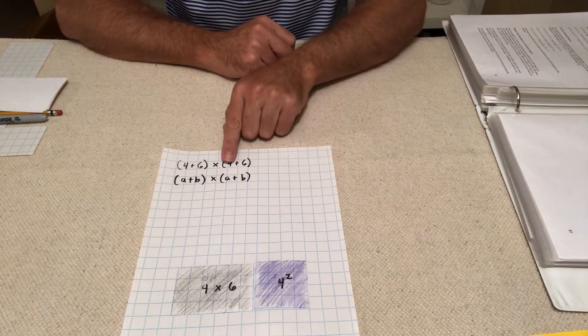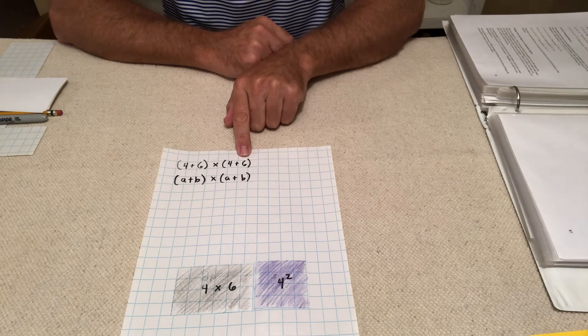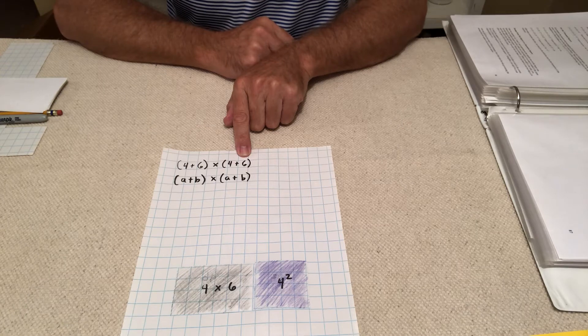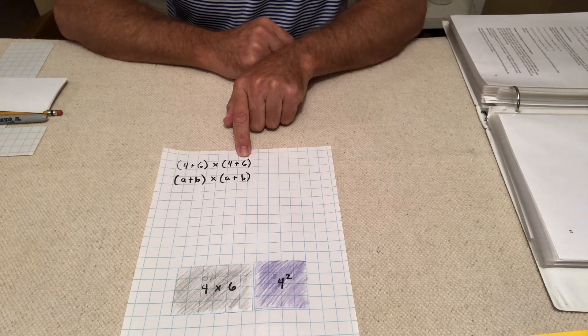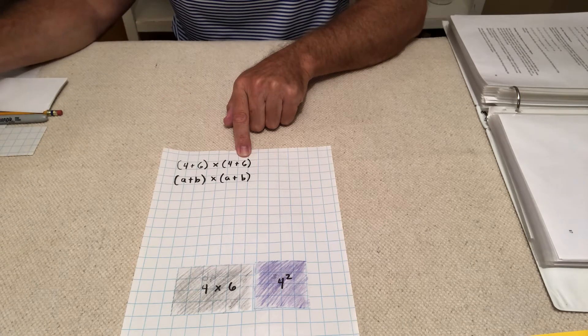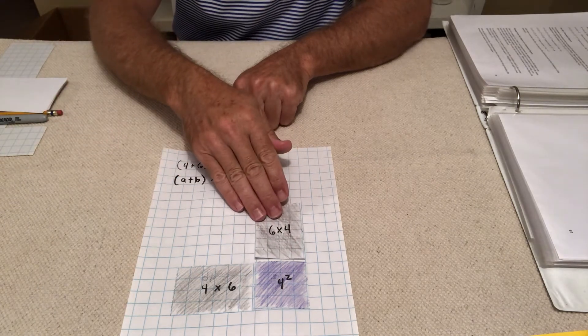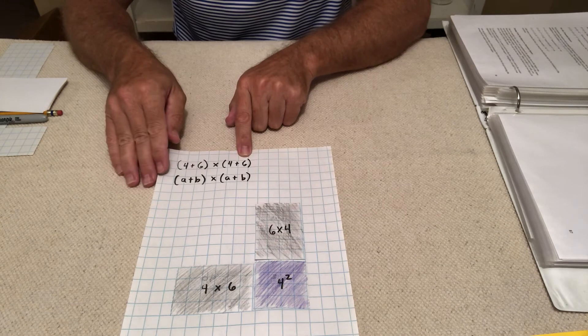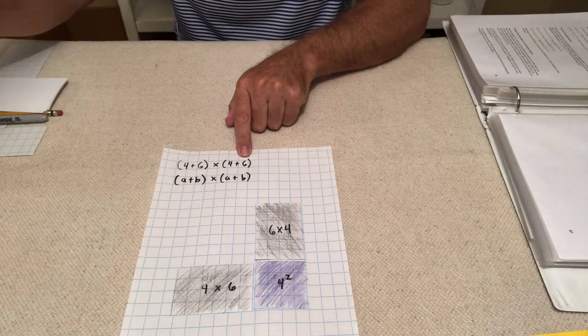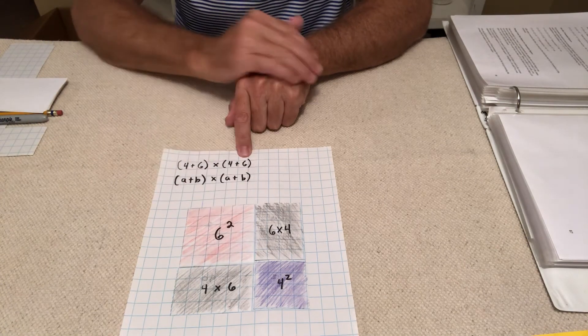And then I've got to switch to the other number in my binomial. And now I have to multiply 4 plus 6 times 6. So the second part of this would be to have the 6 times 4. Now it looks like that. And then the last part is to multiply 6 times 6, which is 6 squared.